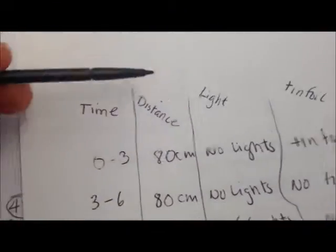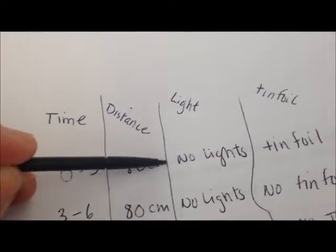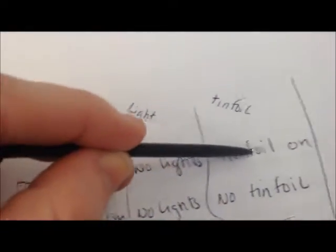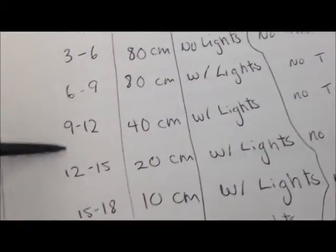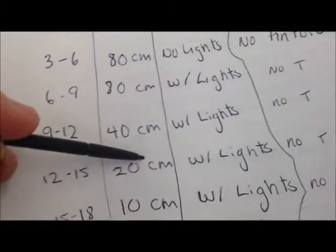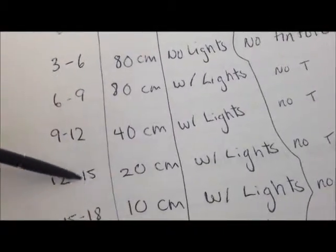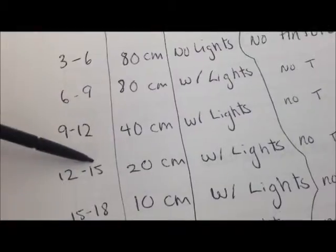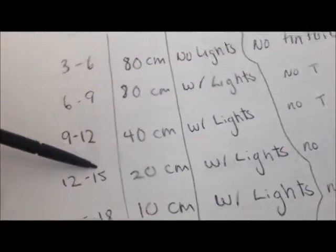And you can do that throughout. So that would be my time slot of 0 to 3 minutes. So this is my 80 centimeters distance, no lights, with the tinfoil on. So let's pick another point. Why don't we choose 12 to 15 minutes. So we'll look at the ending time point because that way we'll have a more steady state.